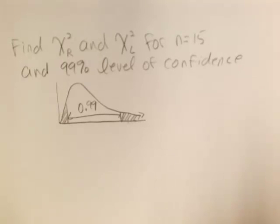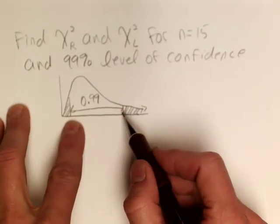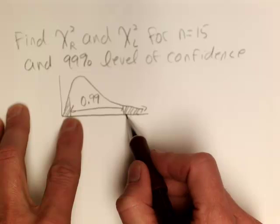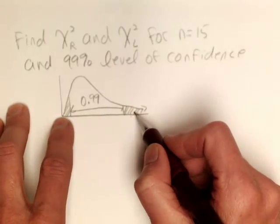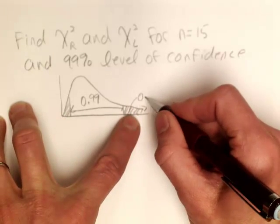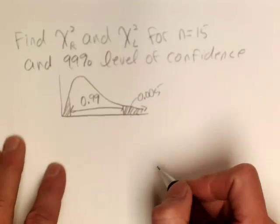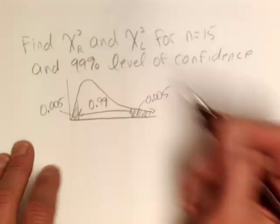You want to make sure you're finding the correct way to read this so you can use the table. If I partition the curve, I know that together I have 1% of the area, or .01. So in the right tail I'm going to have .005 amount of area, and in the lower tail I'm also going to have .005 amount of area.